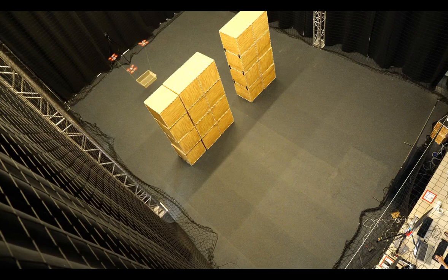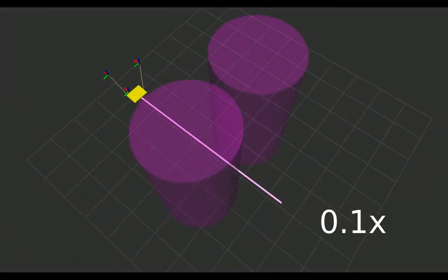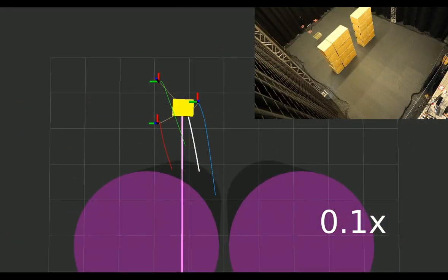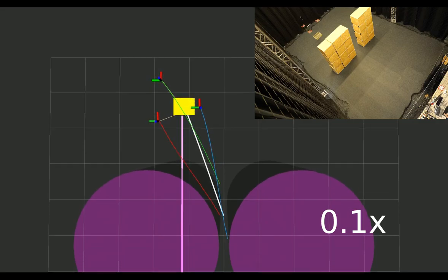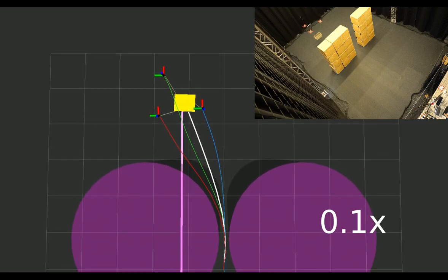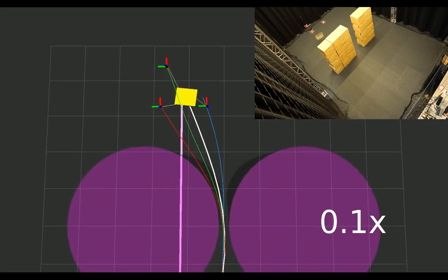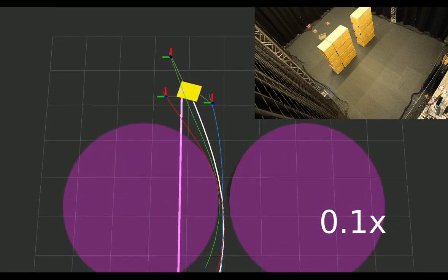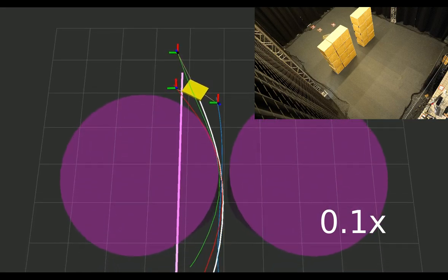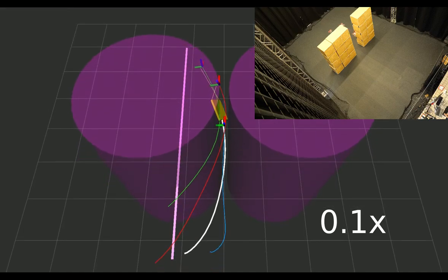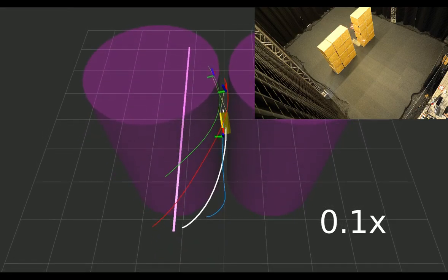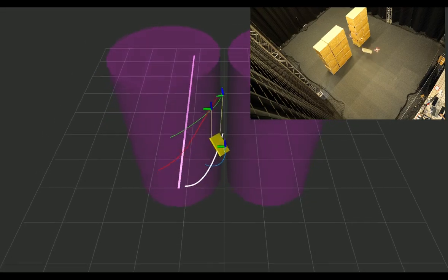Our algorithm solves an online kinodynamic motion planning problem. Given a load reference trajectory in purple color, the planner generates predicted reference trajectories for each quadrotor in a receding horizon fashion to collaboratively execute the white-colored predicted payload trajectory. Meanwhile, the position and orientation of the load are precisely controlled to ensure collision-free traversal through the narrow passage, ultimately reaching the target pose.